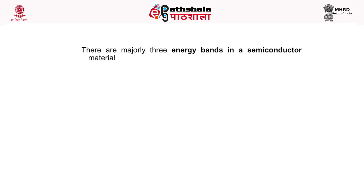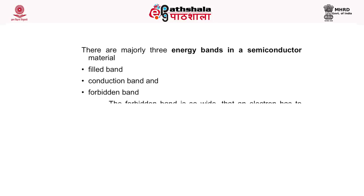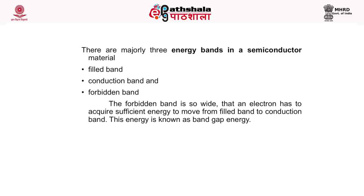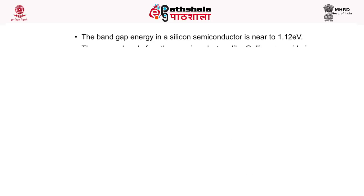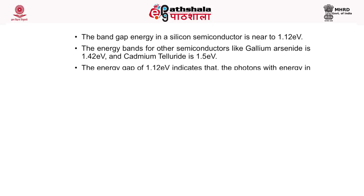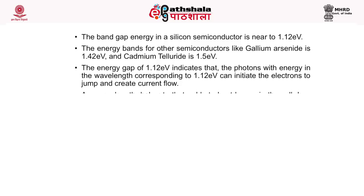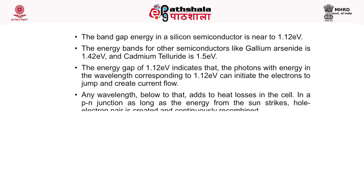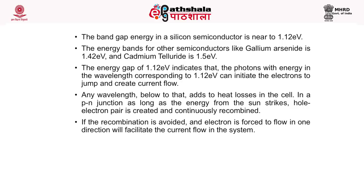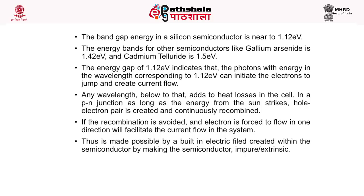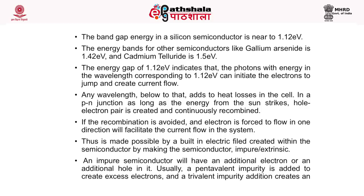There are majorly three energy bands in a semiconductor: the filled band, conduction band, and forbidden band. The forbidden band is so wide that an electron has to acquire sufficient energy to move from the filled band to the conduction band. This energy is known as band gap energy. The band gap energy in silicon is 1.12 electron volt. For other semiconductors, gallium arsenide is 1.42 eV and cadmium telluride is 1.5 eV. The energy gap of 1.12 eV in silicon indicates that photons with energy corresponding to this wavelength can initiate electrons to jump and create current flow.